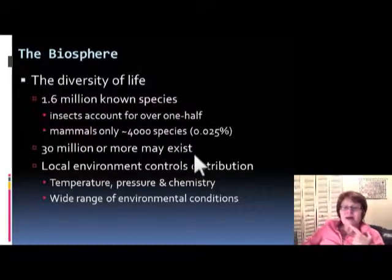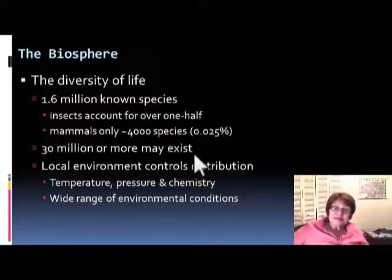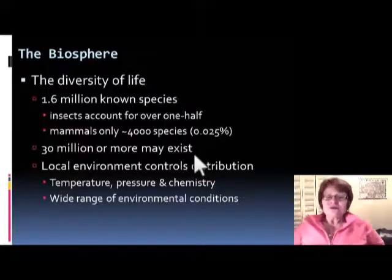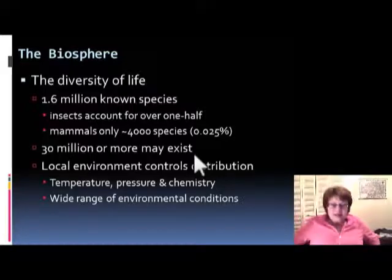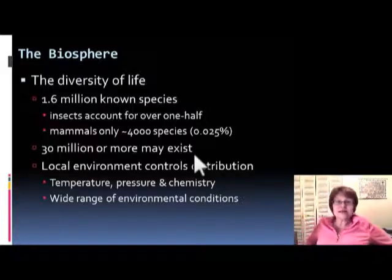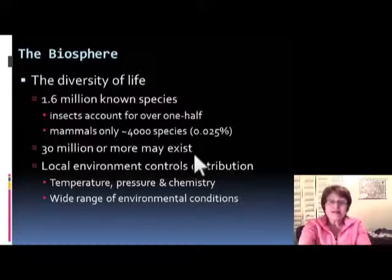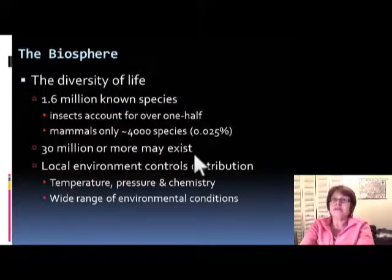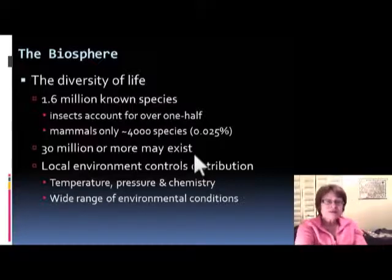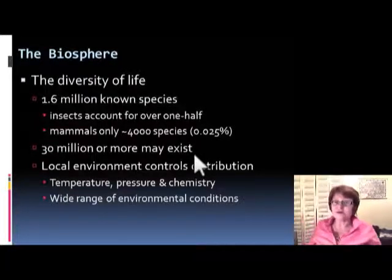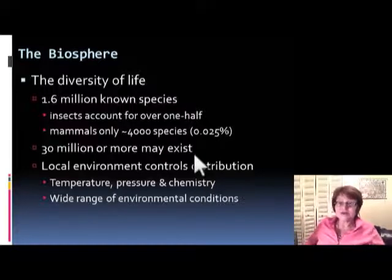It's an interesting fact that about half of all the known species are insects, and another interesting fact is that insects can actually withstand radioactivity and radiation more than we do. So if we get to the point where we kill ourselves with radioactive weapons and we all die, the cockroaches and all the insects will happily survive on earth — that's going to be the next generation.